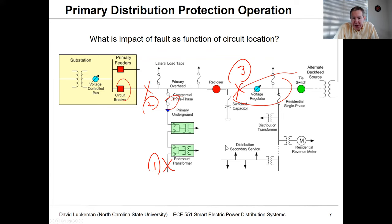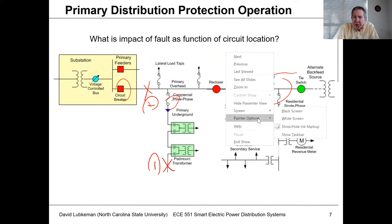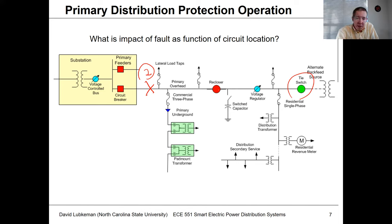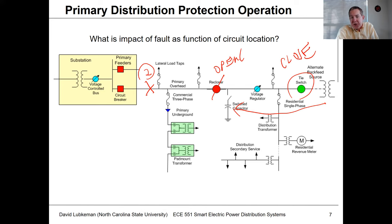For this circuit scenario number two — if we have a fault here — what if we had automation where I could operate this tie switch automatically? I could open up this recloser, close this switch, and restore service to all these customers below the recloser while we're waiting to fix the fault at location number two. That could be done manually by a crew or through automation. Those are the types of things we're going to be talking about — getting a baseline for expected reliability metrics and then what we could do to improve those metrics.